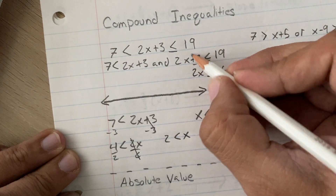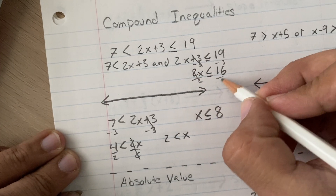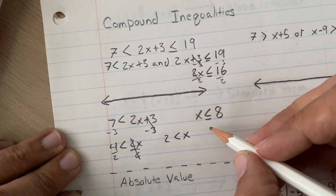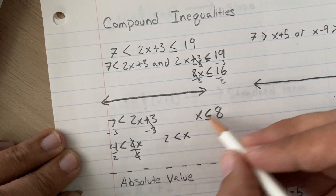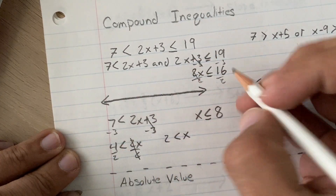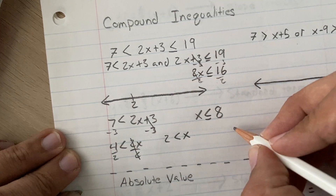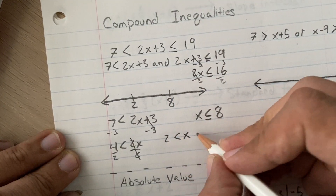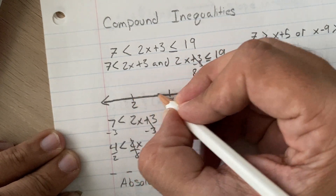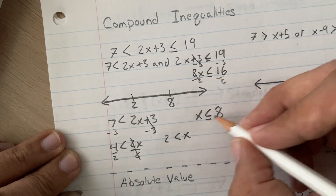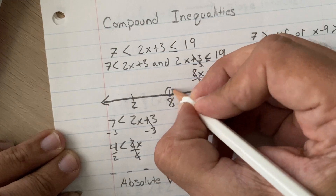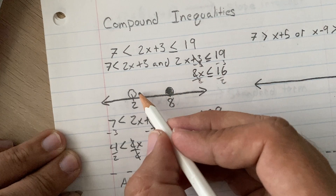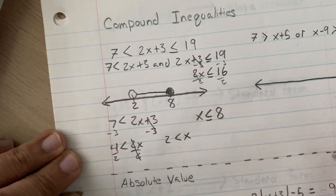We subtracted 3 and then divided by 2. So now we just have to graph these. We're going to find 2 and find 8. x is greater than 2, so it goes this way, and x is less than 8. This circle is going to get filled, and this circle is going to be open, and they're going towards each other.